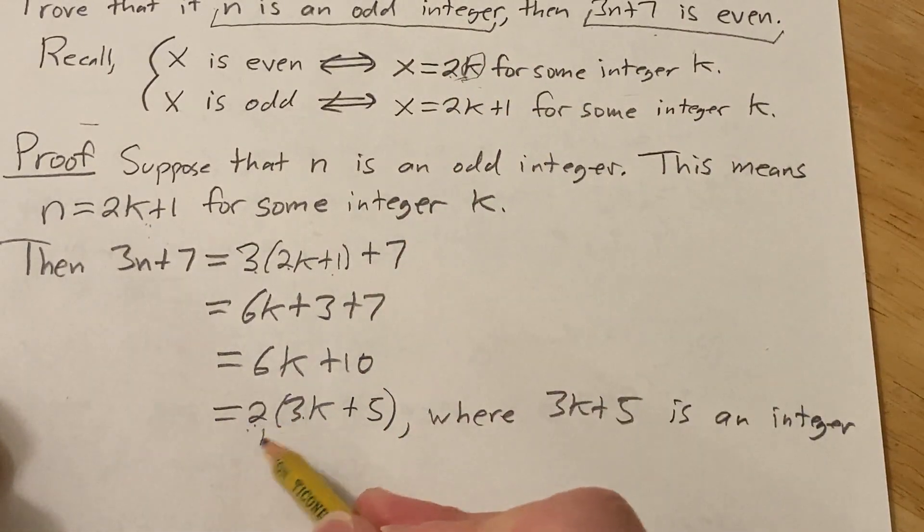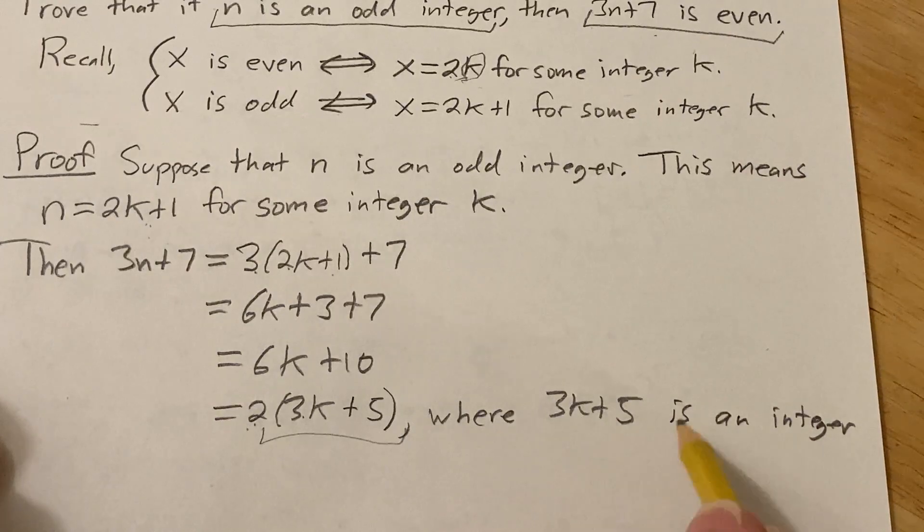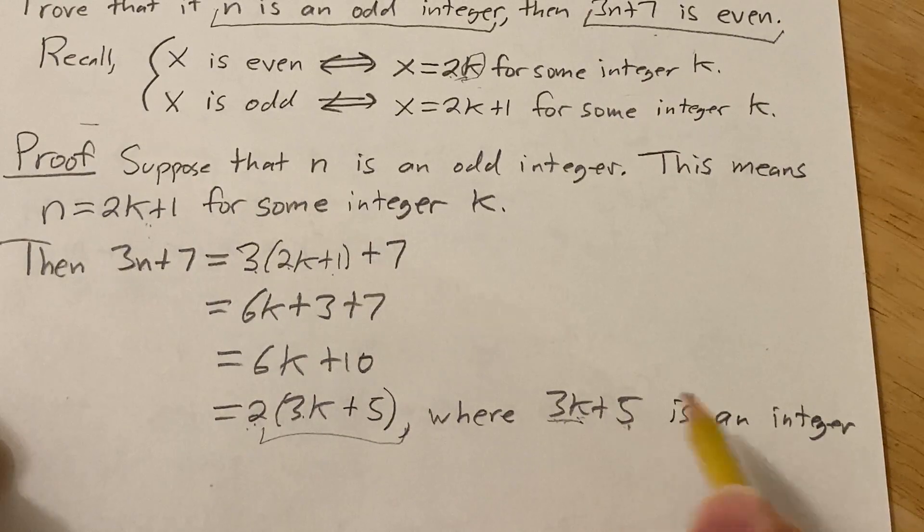Well here we're saying it's 2 times an integer, and if you're curious why this is an integer, it's a product of integers, which is an integer, and then you have a sum of integers, which is also an integer, so the whole thing is an integer.